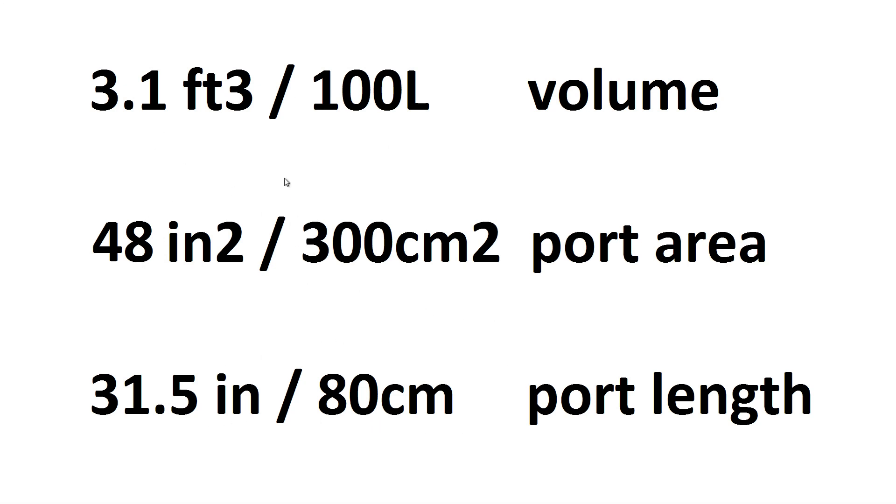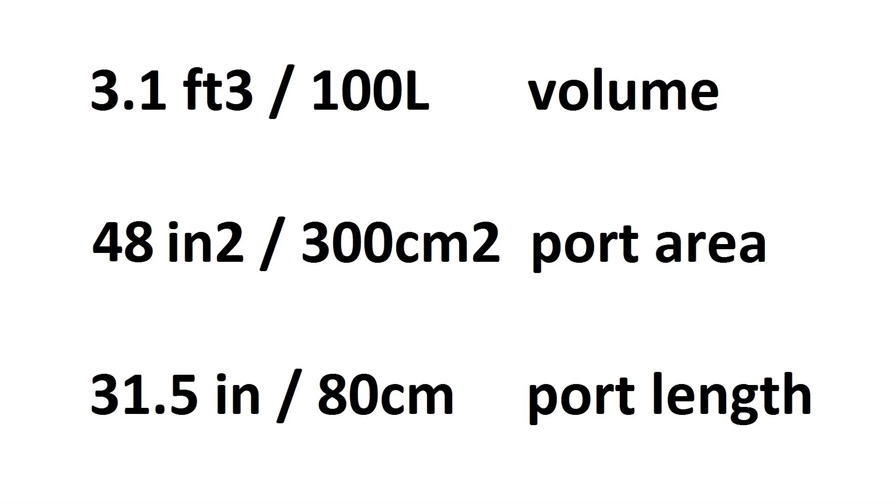So what do we have to do next? We've got to work out the port displacement. So here we've got three decimeters by one decimeter, so an area of three square decimeters by eight decimeter length, which is how long the port is, and we get a volume of 24 liters.